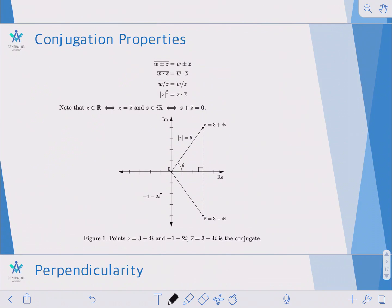If you have a complex number z equals a plus bi, well, its conjugate is a minus bi. And if we take, for example, 3 plus 4i,